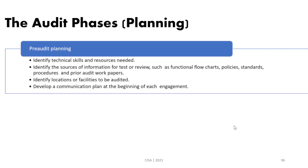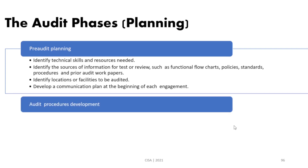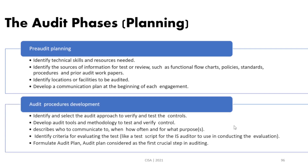Developing a communication plan is essential at the beginning of each engagement — you need to know the key stakeholders and how to communicate with them. Then we move to audit procedures development. We start developing our auditing methodology and audit plans, and grab the checklist that will be used to evaluate controls. Formulating the audit plan is considered the first crucial step in the real audit execution.